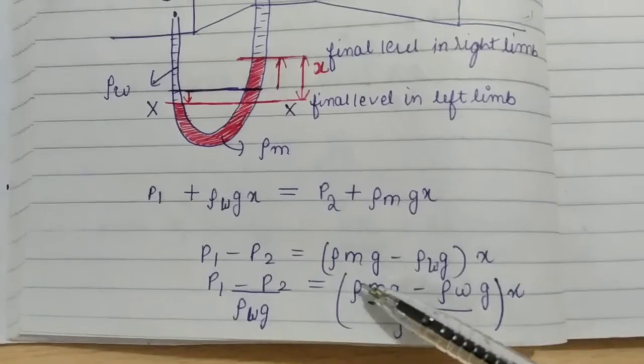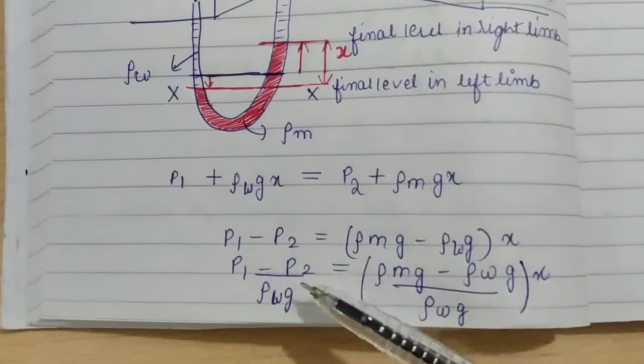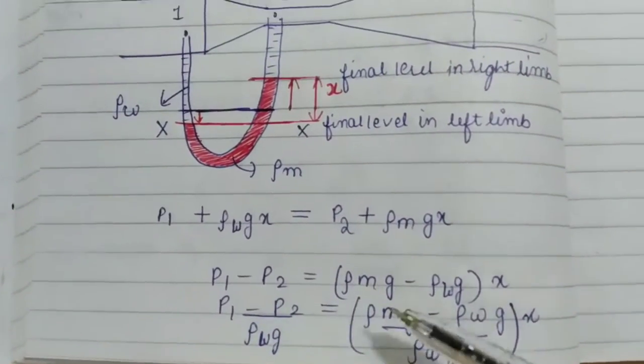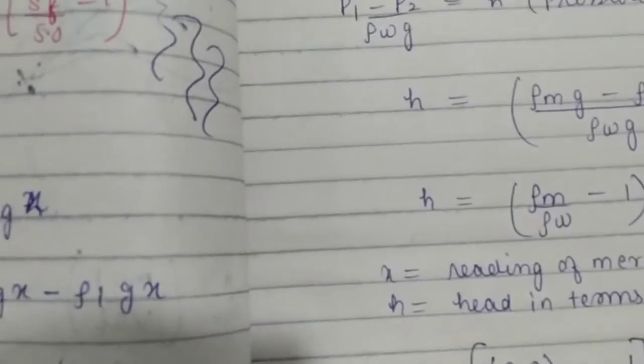P1 minus P2 divided by rho Wg that will give you head. Now, here you can see.